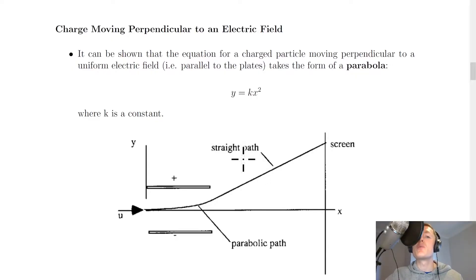We've already seen what happens when charge moves parallel to an electric field, but now we're going to look at charge moving perpendicular to an electric field, where the charge moves parallel to the plates. It can be shown that the equation for a charged particle moving perpendicular to a uniform electric field takes the form of a parabola, y equals kx squared, where k is a constant.